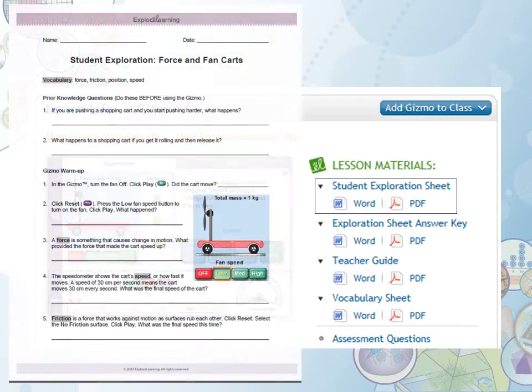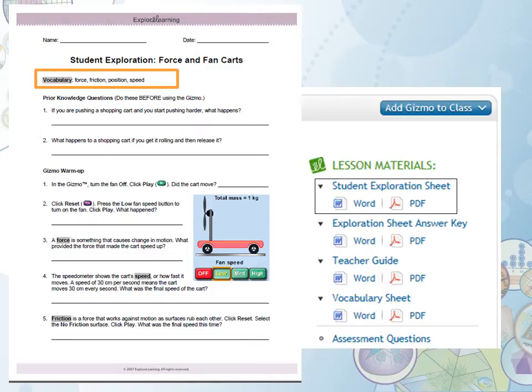This is the student exploration sheet. Notice that it begins by identifying key vocabulary terms here right at the very top. These key terms are then highlighted throughout the activities as shown by these examples. By doing so, this helps to support standard RST4.